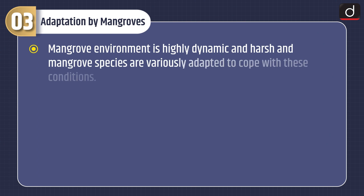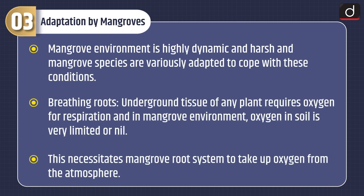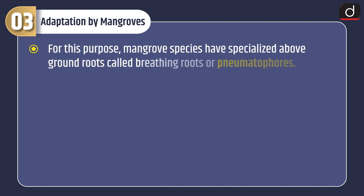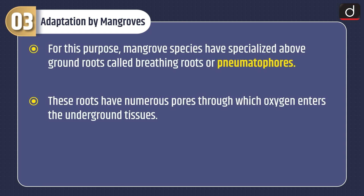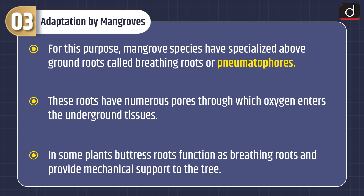Now let's discuss about adaptation by mangroves. Mangrove environment is highly dynamic and harsh and mangrove species are variously adapted to cope with these conditions. Breathing roots: underground tissue of any plant requires oxygen for respiration and in mangrove environment, oxygen in soil is very limited or nil. This necessitates mangrove root systems to take up oxygen from the atmosphere. For this purpose, mangrove species have specialized above-ground roots called breathing roots or pneumatophores.